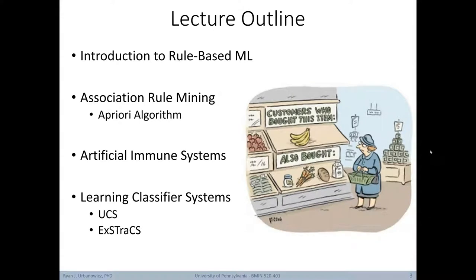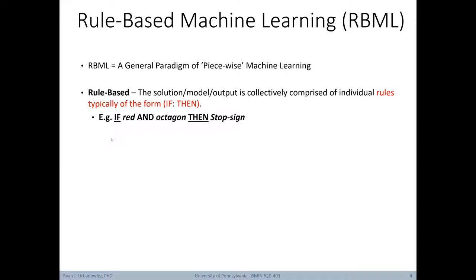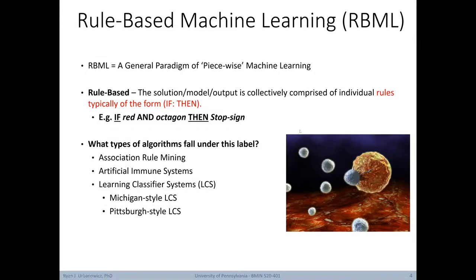In today's lecture we're going to start with an introduction to rule-based machine learning and cover what it is. Then we'll take a look at three different families of rule-based machine learning, including association rule mining with focus on the a priori algorithm, artificial immune systems, and learning classifier systems. To start, rule-based machine learning, or RBML, is a general paradigm of piecewise machine learning. By rule-based we mean that the solution or model we're generating is collectively comprised of a bunch of individual rules, typically of the form of if-then. So for example, if-red and octagon-then-stop sign.